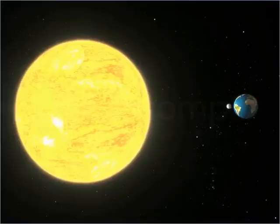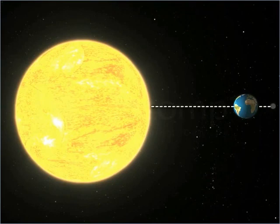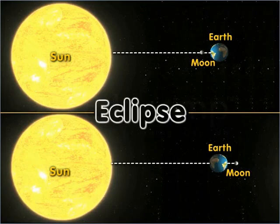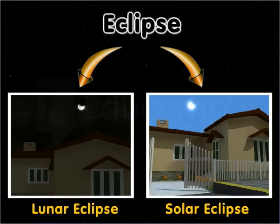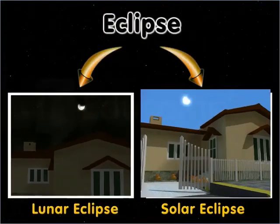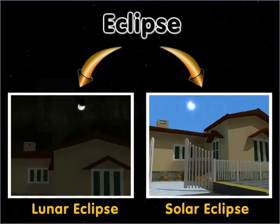At times, the Moon, Sun and Earth come into a straight line. This is when an eclipse occurs. There are two types of eclipses, lunar and solar. Let us learn about each in detail.